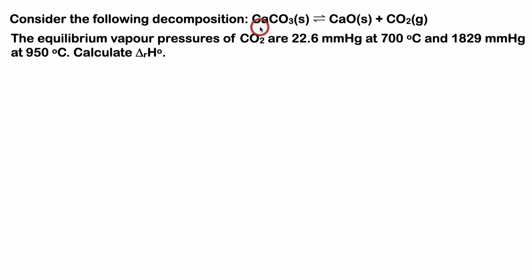Consider the following decomposition: calcium carbonate solid in equilibrium with calcium oxide solid and carbon dioxide gas. The equilibrium vapor pressures of CO₂ are 22.6 mmHg at 700°C and 1829 mmHg at 950°C. The question asks us to calculate the change in standard enthalpy of the reaction.